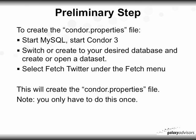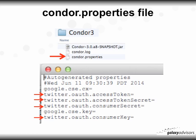The preliminary step is this: to create the ConorProperties file, start MySQL if it's not already started, then start Conor3. Switch to or create your desired database and create or open a data set. Select Fetch Twitter under the Fetch menu. This will create the ConorProperties file. Note you only have to do this once.